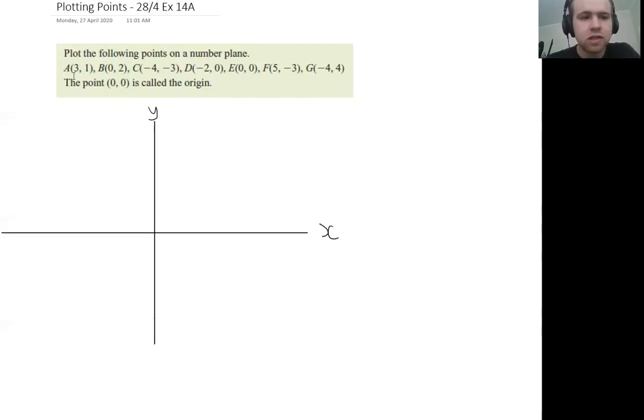So each of these points here, A, B, C, etc., have two numbers and we need to plot them on this 2D space that we've just created. What you would do in your books is rule out that horizontal one, label it x, rule out the vertical one, label it y, and also add in these little arrows.